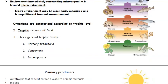Organisms are categorized according to their trophic level — trophic just means food. There are three general trophic levels: primary producers, consumers, and decomposers.